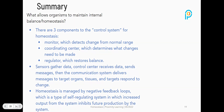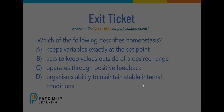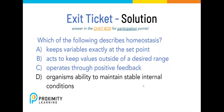For our exit ticket: which of the following describes homeostasis? If you chose D — an organism's ability to maintain stable internal conditions — you are correct.